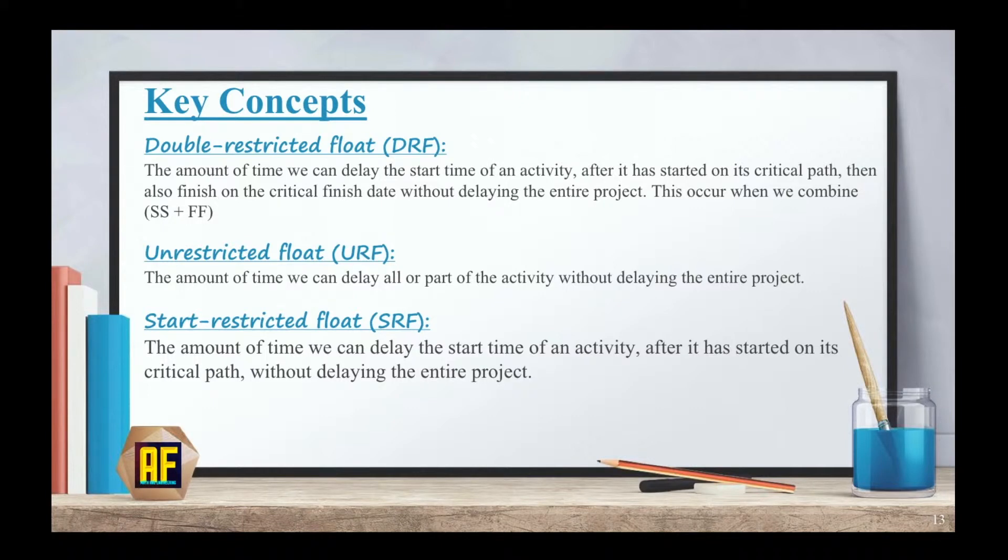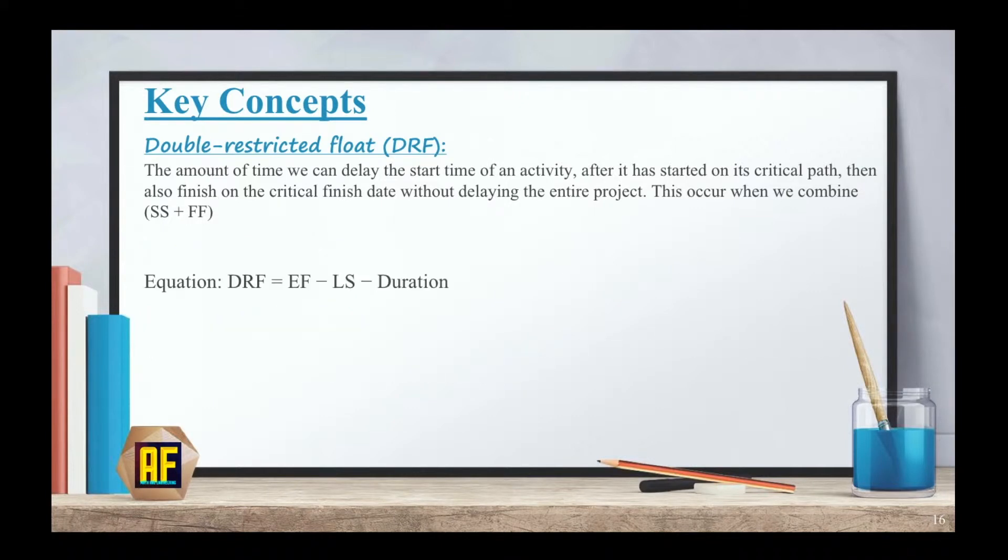Okay, so let's talk a little bit about equations. Starting with the DRF, the equation for the DRF is EF minus LS minus the duration. If our answer is smaller than zero, we just use zero because we have no negative activities. We have no negative numbers in this theory.